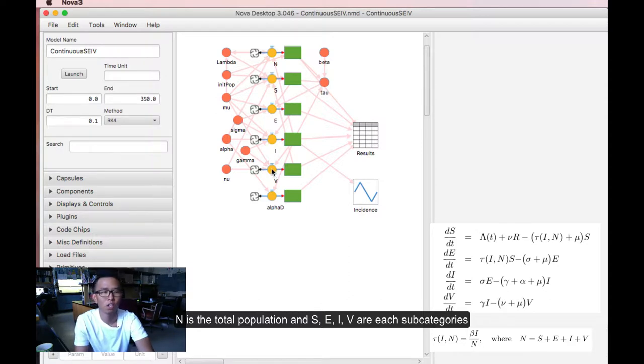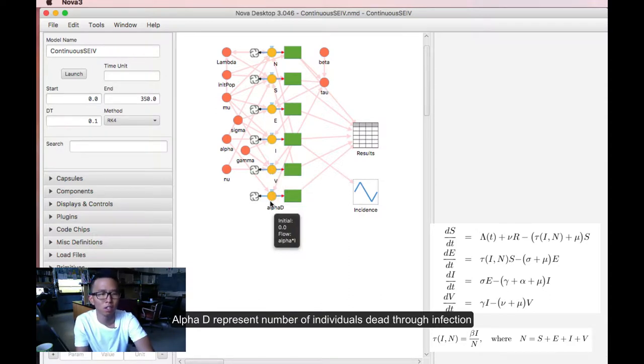S, E, I, and V are each subcategories. And alpha D represents the number of individuals that are dead through infection.